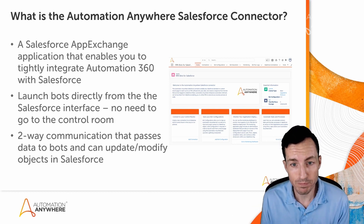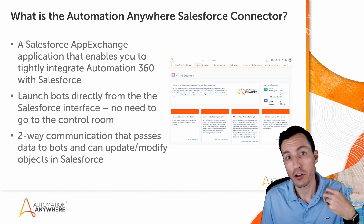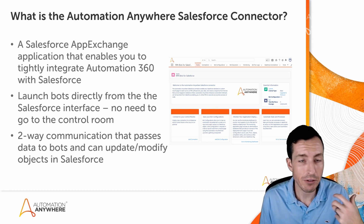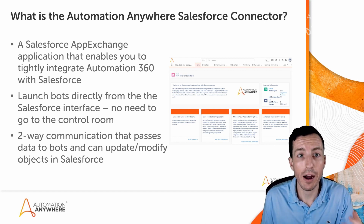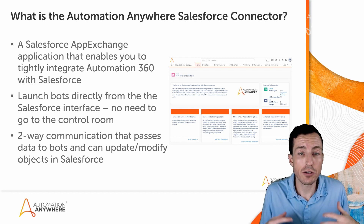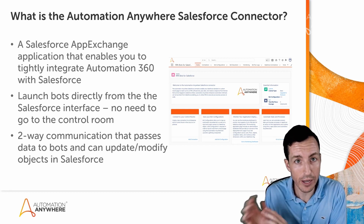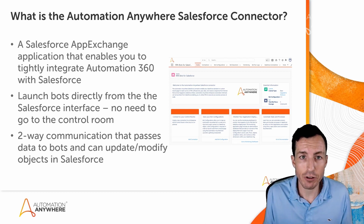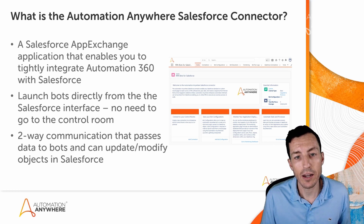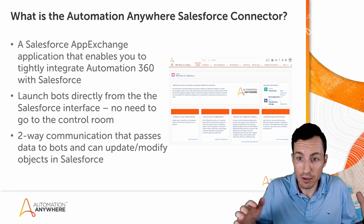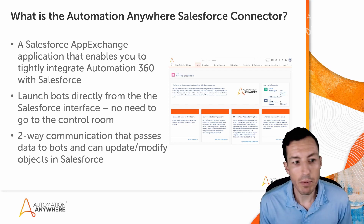The connector allows you to do things like launch bots directly from Salesforce — you don't have to go into the control room, you don't have to select a bot runner or do any of that. This is a great way for Salesforce users to integrate with RPA without needing to know about bot runners and connections. It lets you build Automation Anywhere directly into your Salesforce environment.